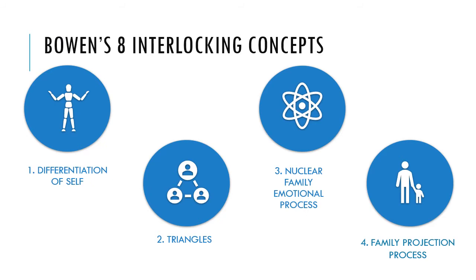Bowen's eight interlocking concepts. Number one: differentiation of self. Differentiation of self is the ability to function autonomously while remaining connected to the family system. Those with poor differentiation function much like a codependent person — they may take on others' problems as their own, have difficulty making decisions and communicating directly, and agree with others to feel accepted. People with higher differentiation can think logically and make intentional decisions, have boundaries, and can say no to what is not beneficial.